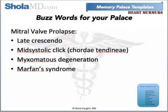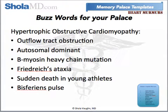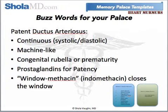For mitral valve prolapse: late crescendo, mid-systolic click, chordae tendineae, myxomatous degeneration, and Marfan syndrome. For hypertrophic obstructive cardiomyopathy: outflow tract obstruction, autosomal dominant, beta-myosin heavy chain mutation, Friedreich's ataxia, sudden death in young athletes, and bisferious pulse. And then for patent ductus arteriosus, which is systolic and diastolic: it's continuous, machine-like, associated with congenital rubella or prematurity. Prostaglandins maintain patency — that's a good one because of the Ps, it's easier to remember — and indomethacin can close a patent ductus arteriosus.